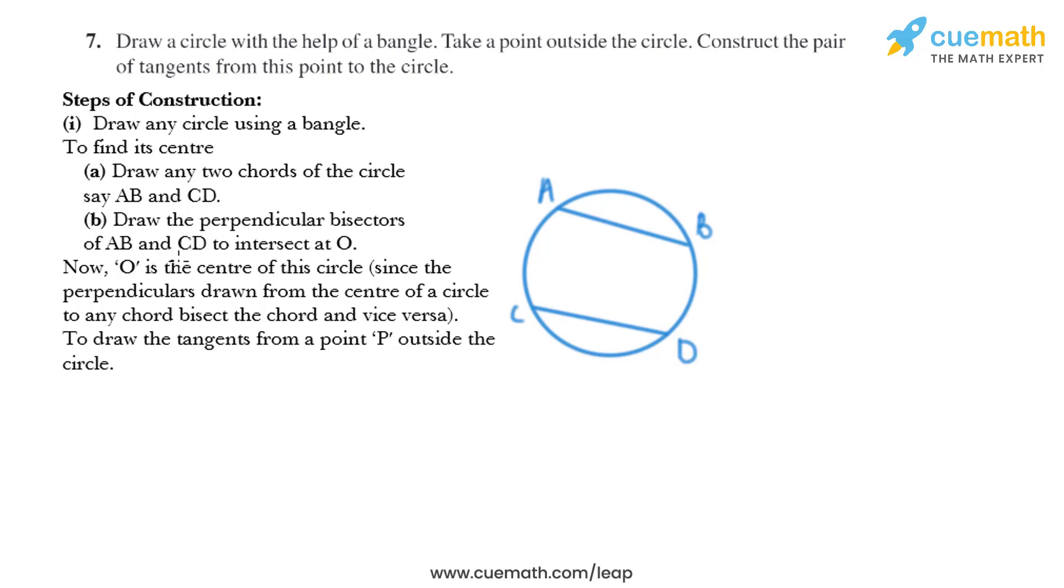Now in the next step, we need to draw the perpendicular bisectors of AB and CD and they will intersect at O. So we have got O as the center of the circle. Now to draw the tangents from a point P outside the circle.